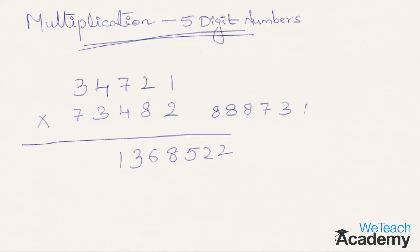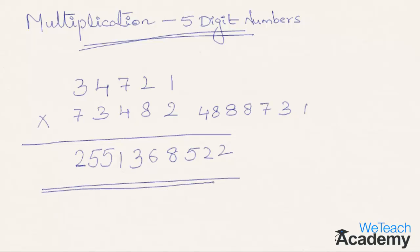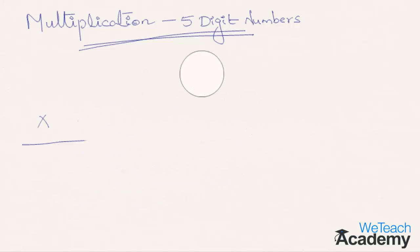Step eight: 3 into 3 is 9, plus 4 into 7 is 28; 9 plus 28 is 37, plus 8 carried forward gives 45. Write 5, carry 4. Final step: 7 into 3 is 21, plus 4 carried forward gives 25. Write 25 in the final answer. The final answer for 34721 multiplied by 73482 is 2,551,368,522.